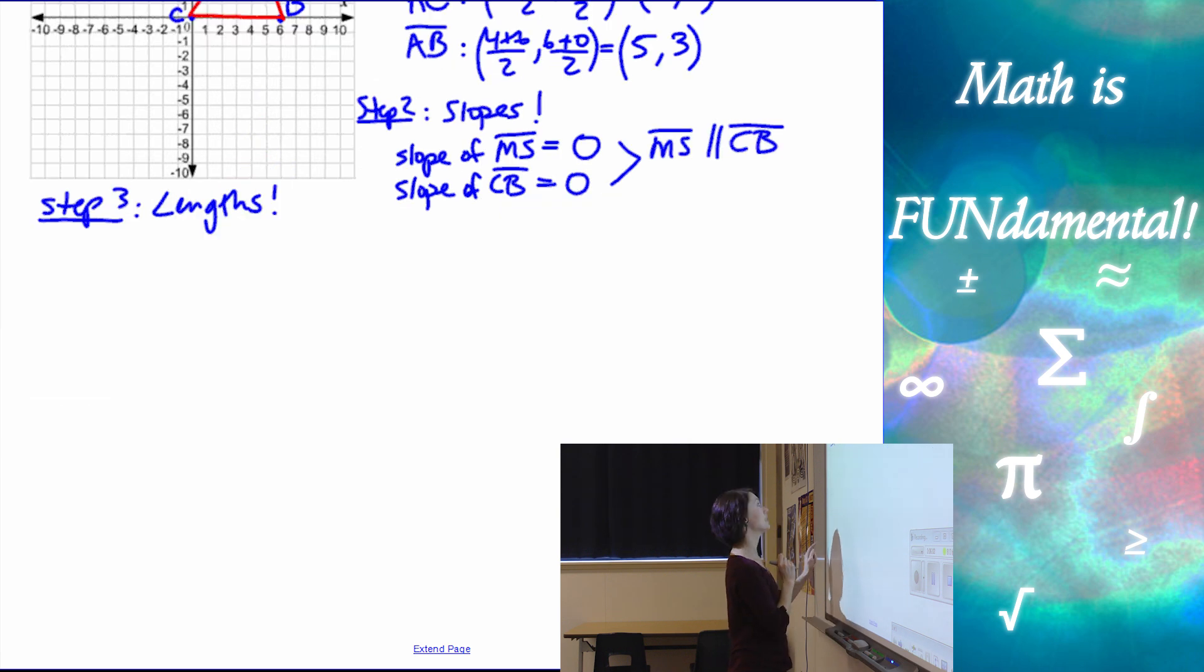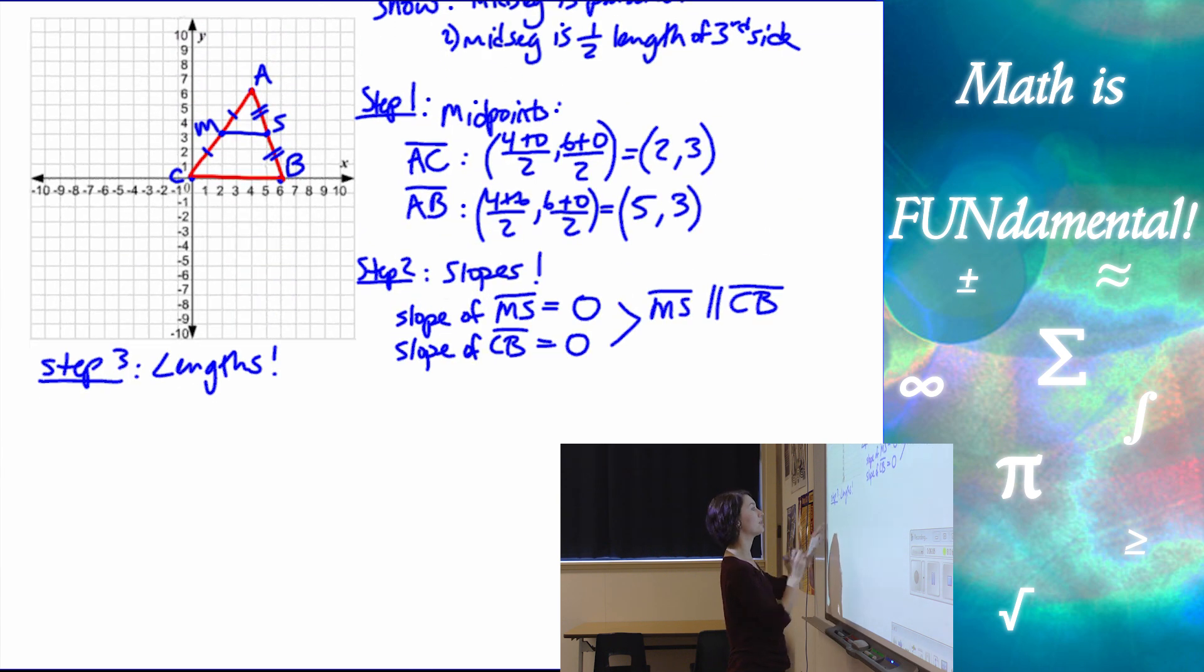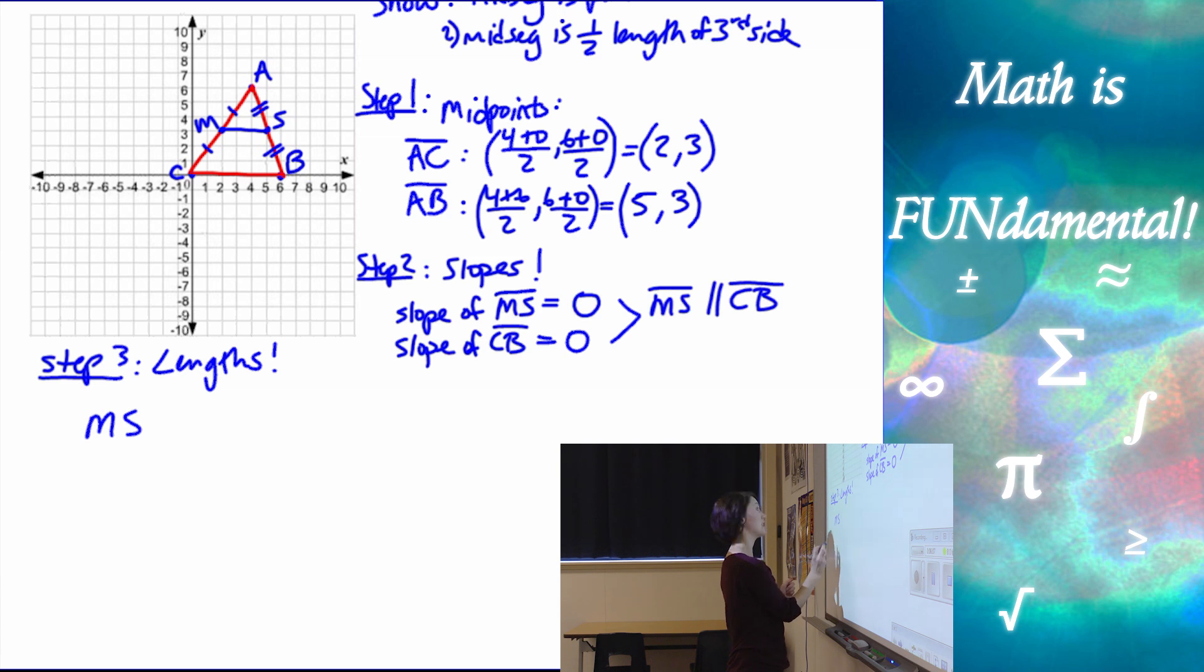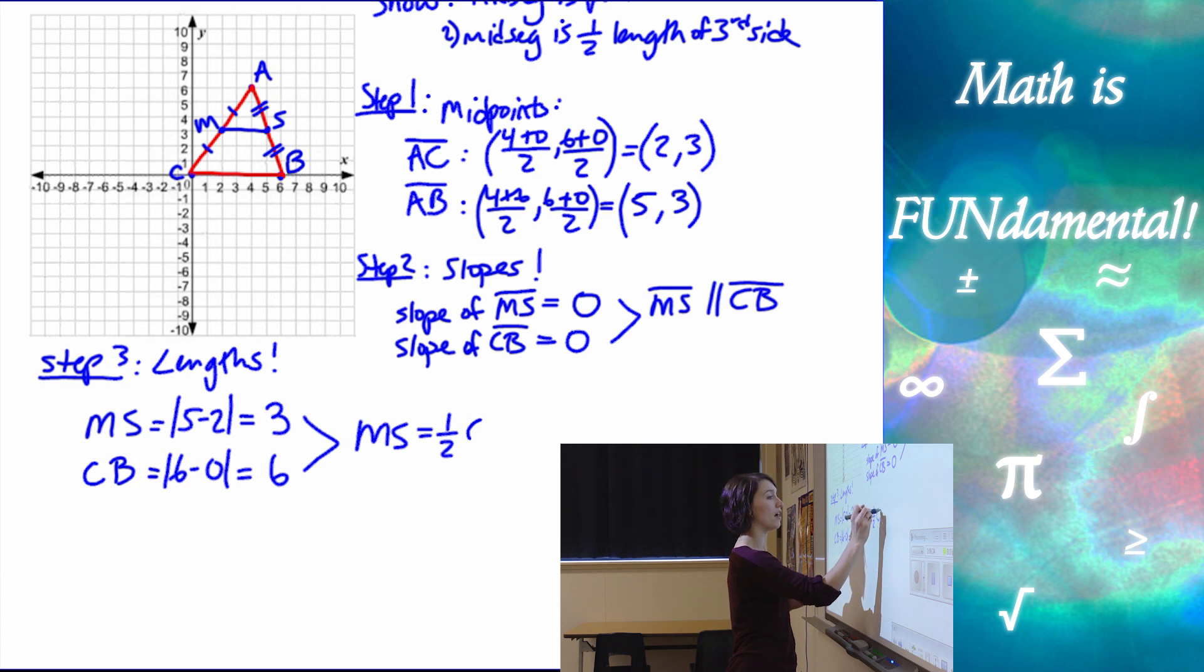Alright, so let's see, extend my page a little bit. So I need to find the length of MS and the length of CB. So MS, and now in this case, because I chose a horizontal side, it's a little easier for me to find the length. So the length of MS goes horizontally from 2 to 5, so the absolute value of 5 minus 2 is going to be 3. And CB goes from 0 to 6, absolute value gives us 6. So MS equals half of CB.